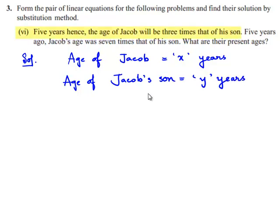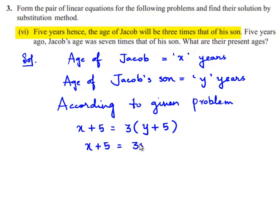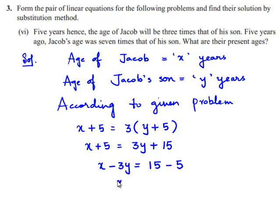According to the given problem we can write: x plus 5 is equal to 3 times of y plus 5, which gives x plus 5 = 3y plus 15. So x minus 3y is equal to 15 minus 5, which is 10. Let this be equation number 1.